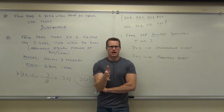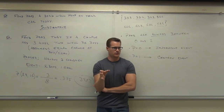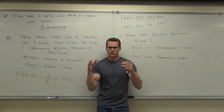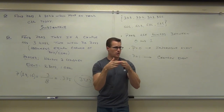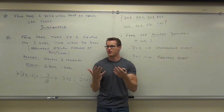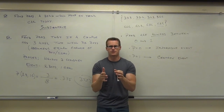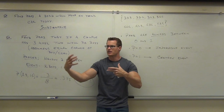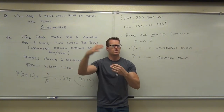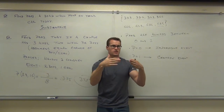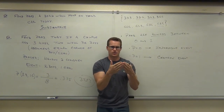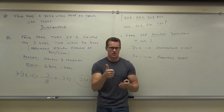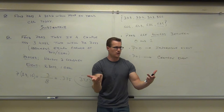If you flip it a million times, you're probably not going to get exactly 500,000 heads and 500,000 tails. But as you increase the number, the observed probability is going to get very close to the classical probability. The more you repeat a procedure, the closer observed will be to classical theory.